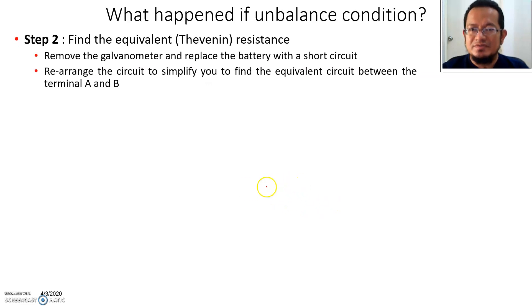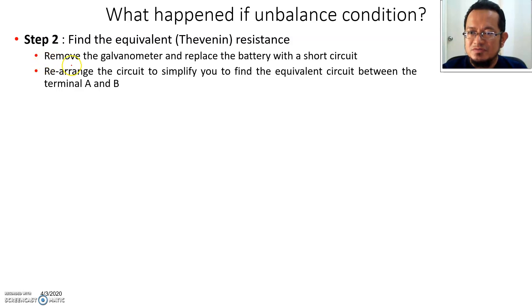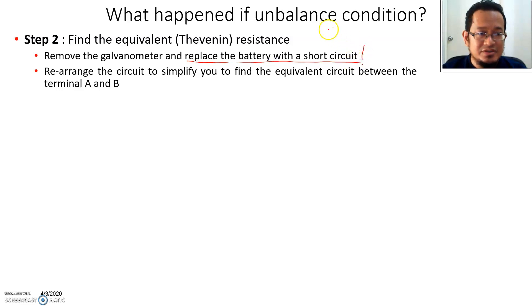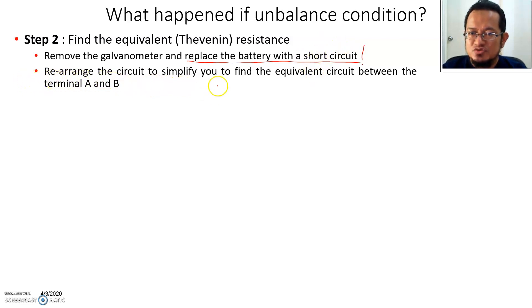Step number two: find the Thevenin resistance. First, you need to remove the galvanometer and replace the battery with a short circuit — since it is a voltage source, you short the battery. After that, you rearrange the circuit to find the equivalent resistance between terminal A and B.